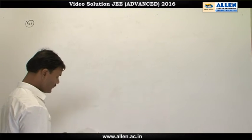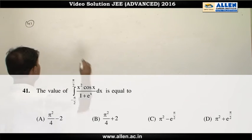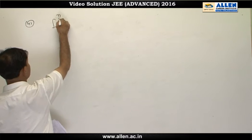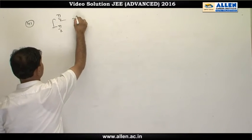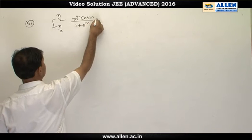Question 41: we have to find the value of the definite integral from minus π/2 to π/2 of x squared times cos x divided by 1 plus e to the power x.